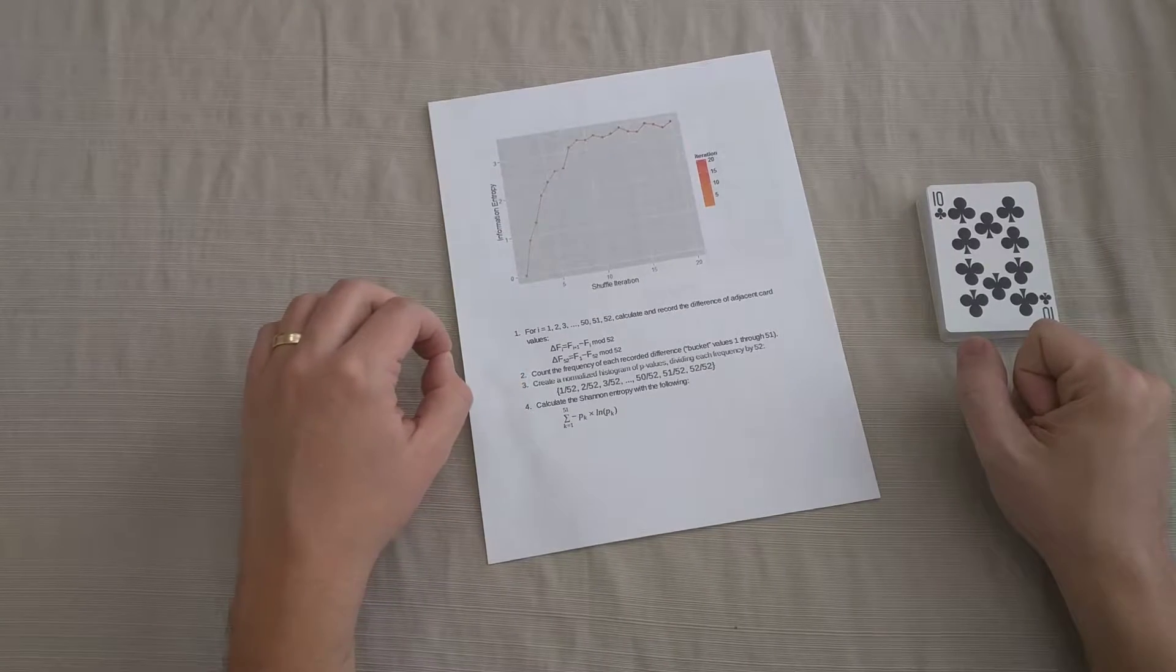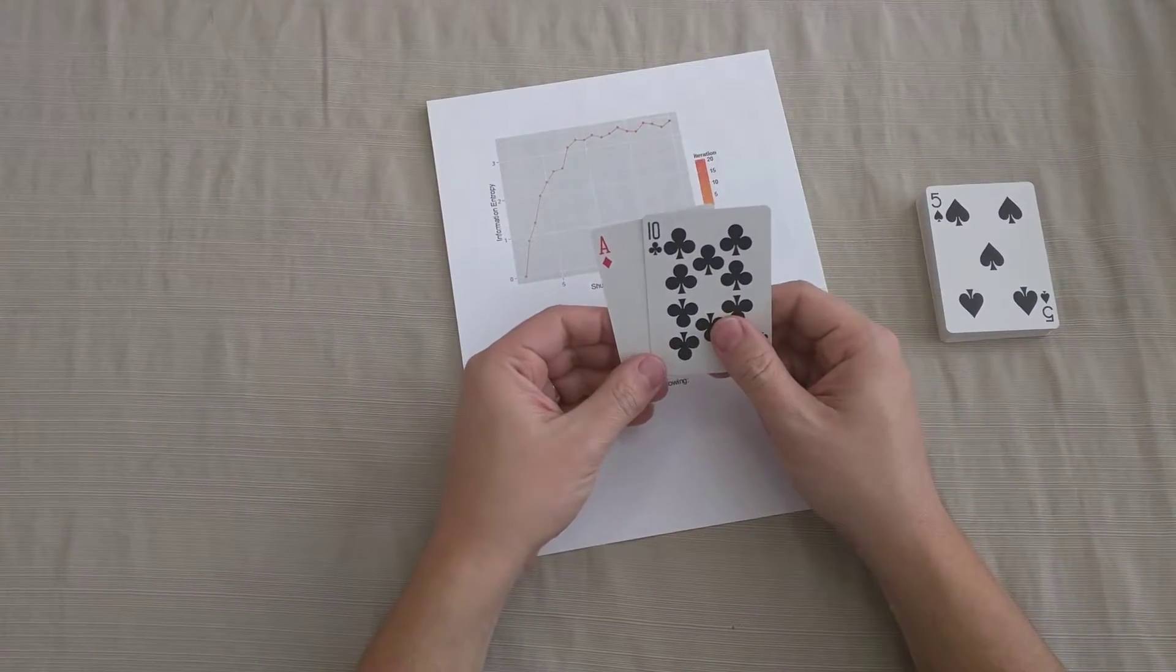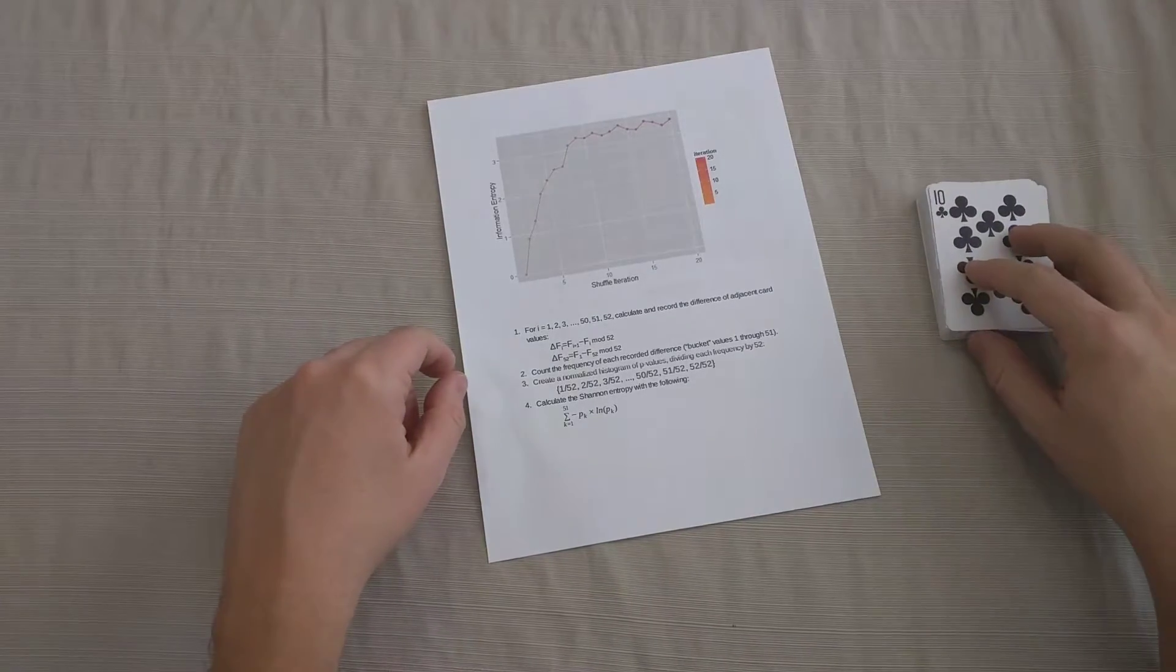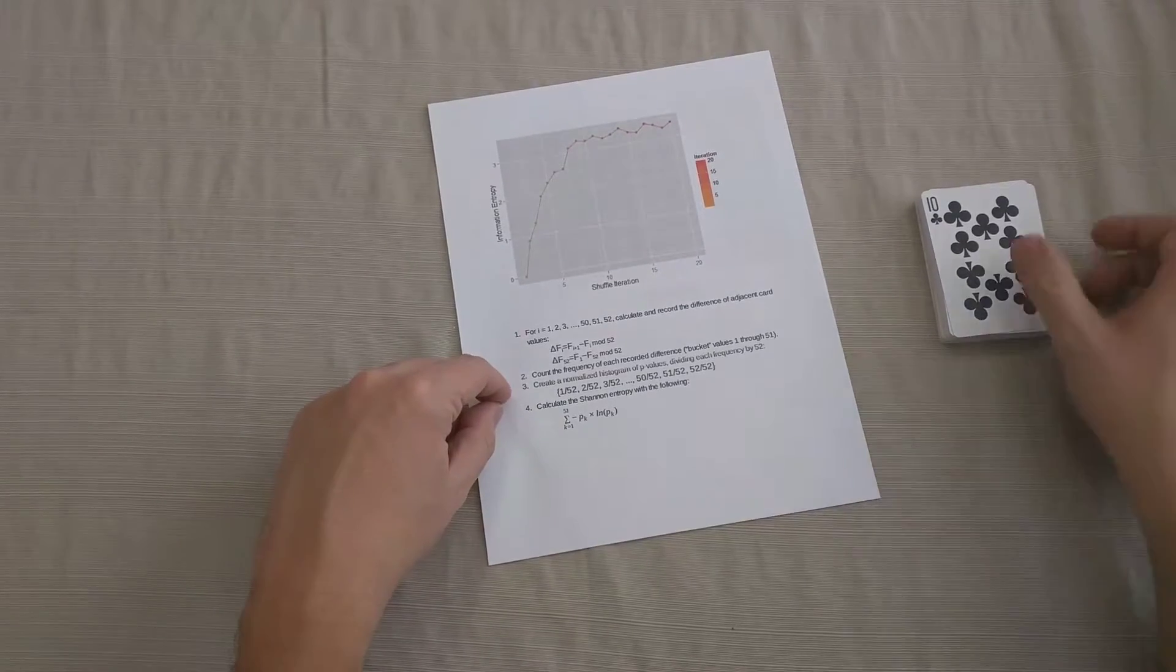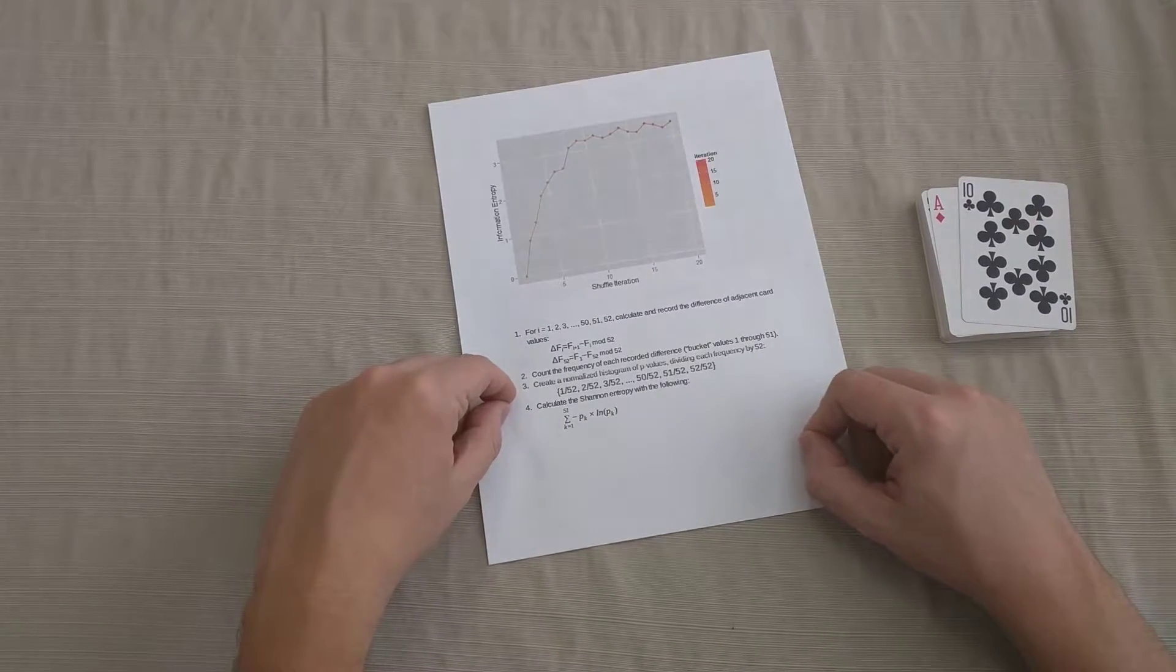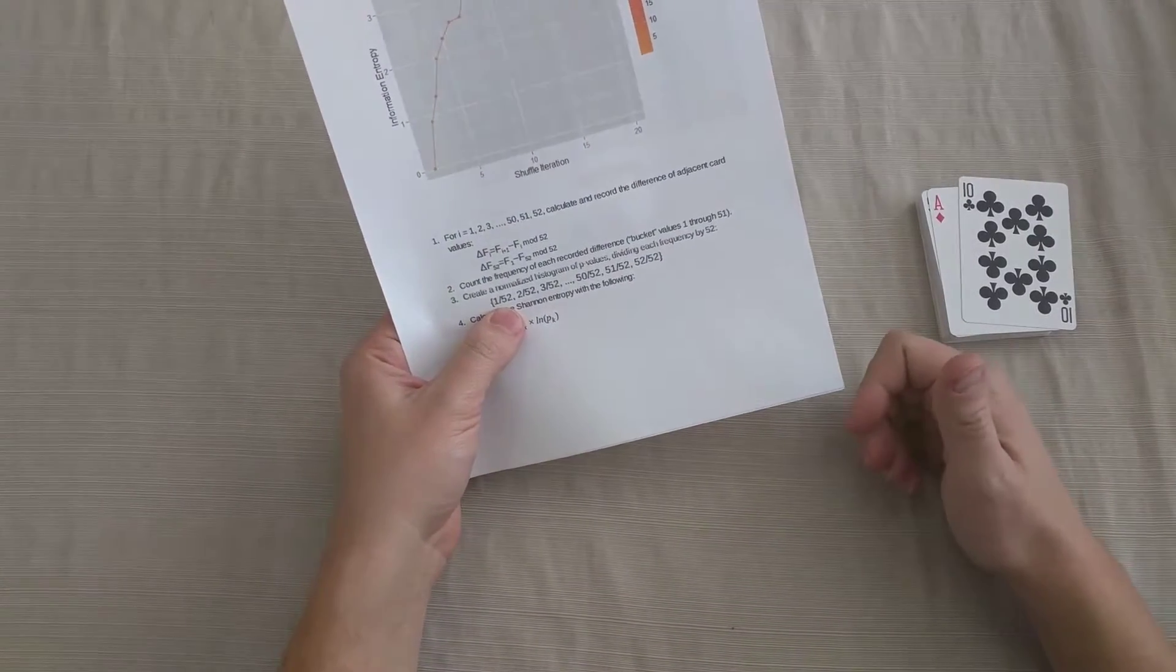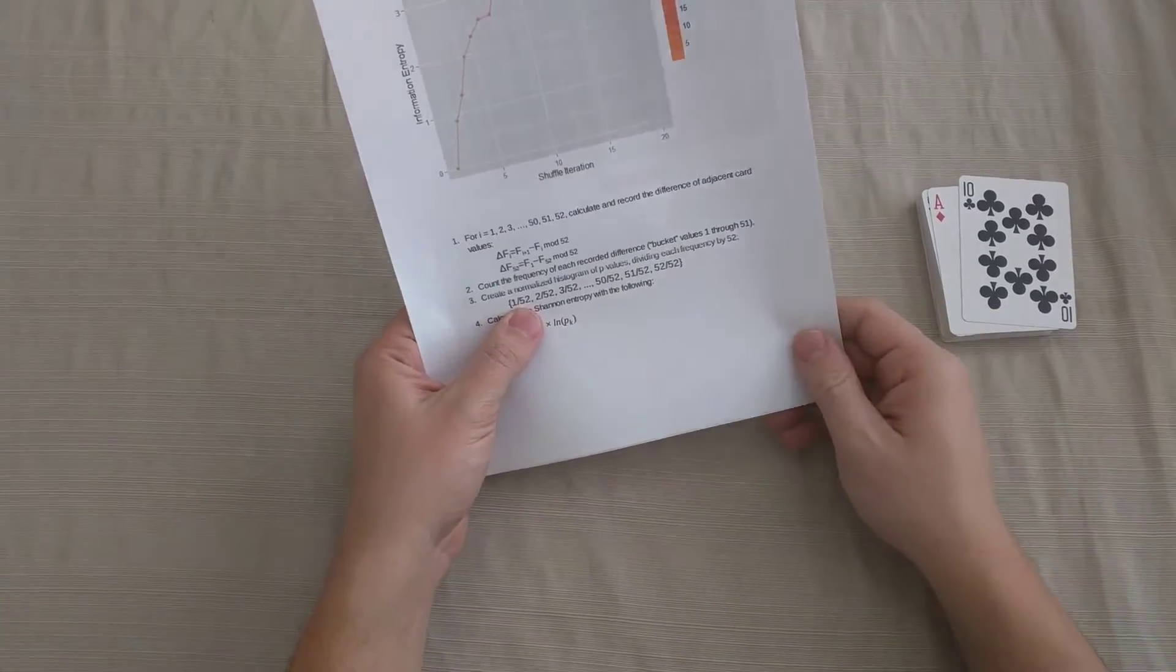I'm going to count the frequencies of these differences. So in this case, 10 minus 14 was a negative 4 plus 52 is 48. How many 48's showed up in my recorded values? I would count all those 48's as a frequency. Maybe three 48's showed up, so I would write down three. And I would look at all the rest of the differences and count how many times that difference shows up in my recorded values. And then I will normalize that by dividing it by 52. Each of those would have an equal chance of showing up.